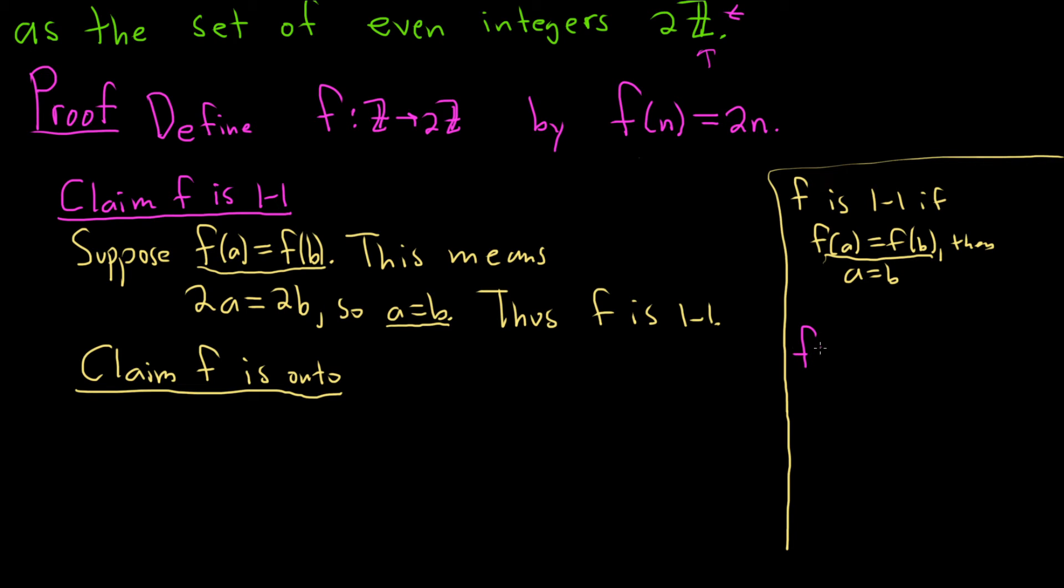A function f from capital A to capital B, where capital A is the domain and capital B is the codomain, is onto or surjective if for all little b in capital B, there exists some element a in capital A such that f of a is equal to b. So this is the definition of onto.